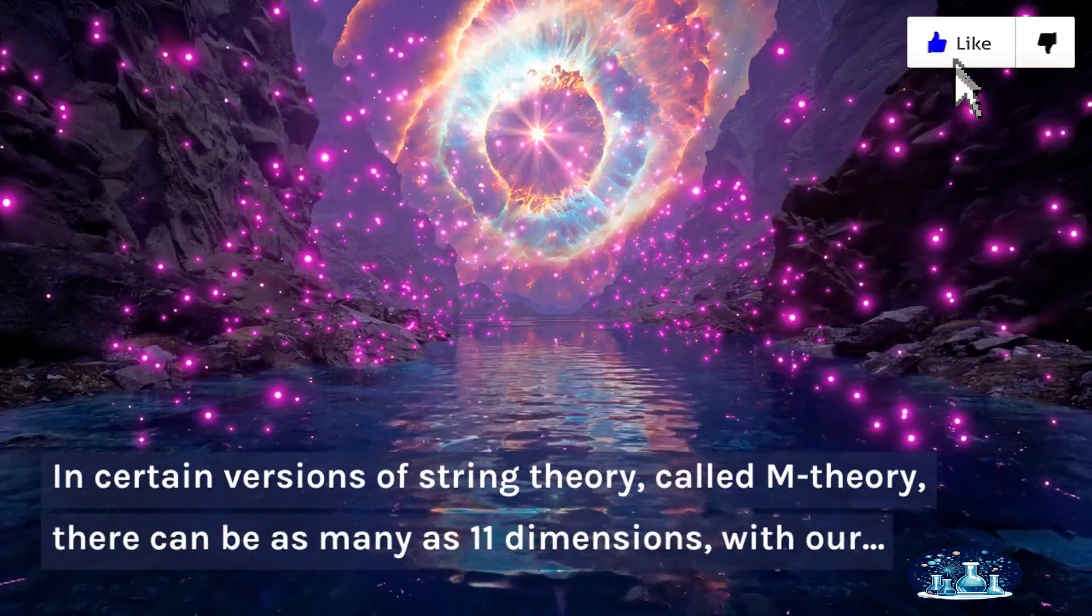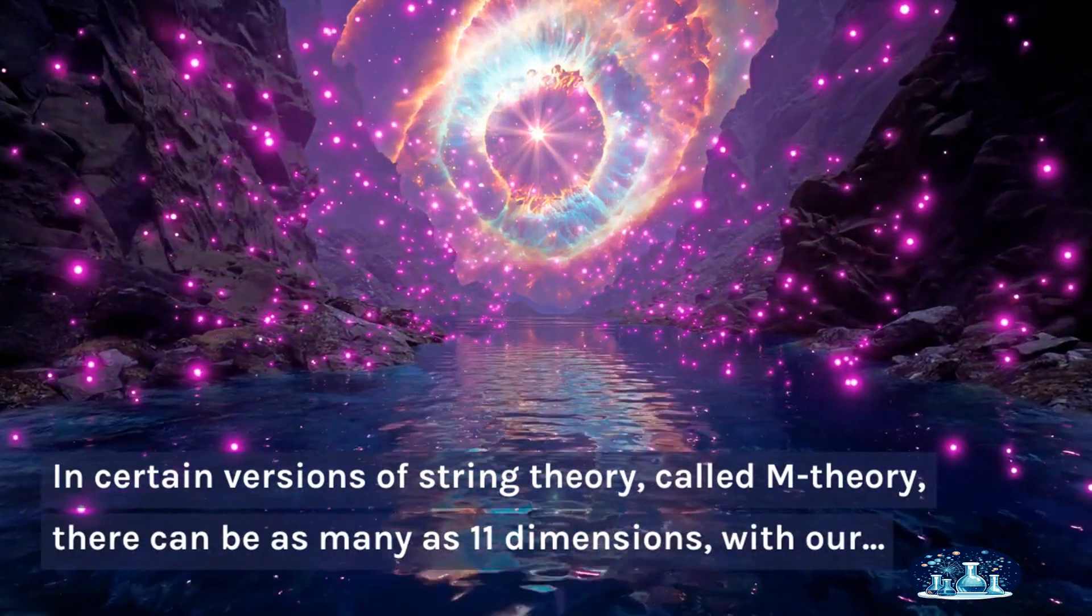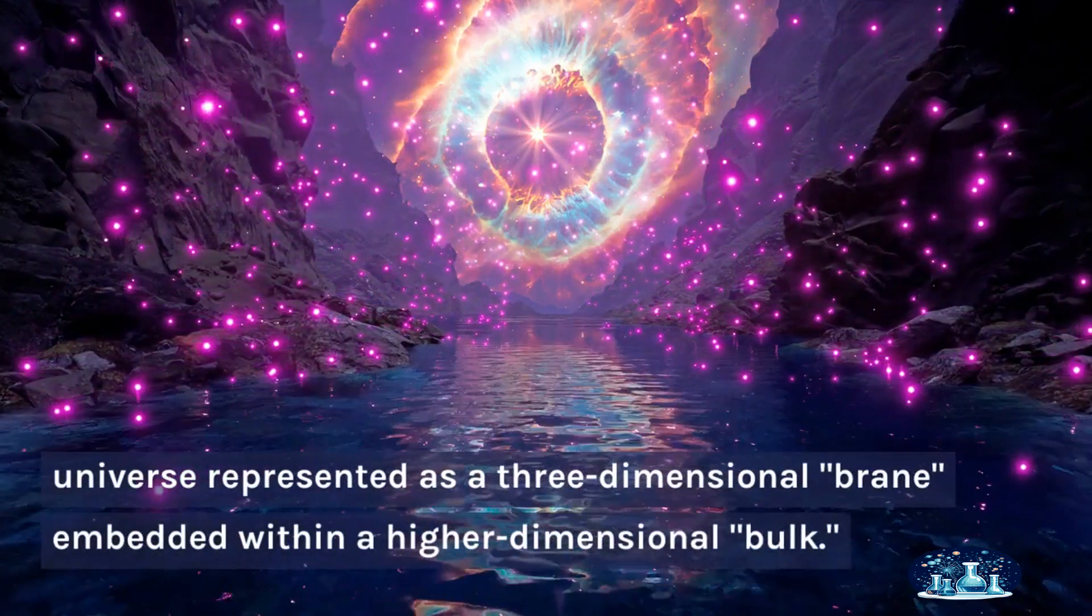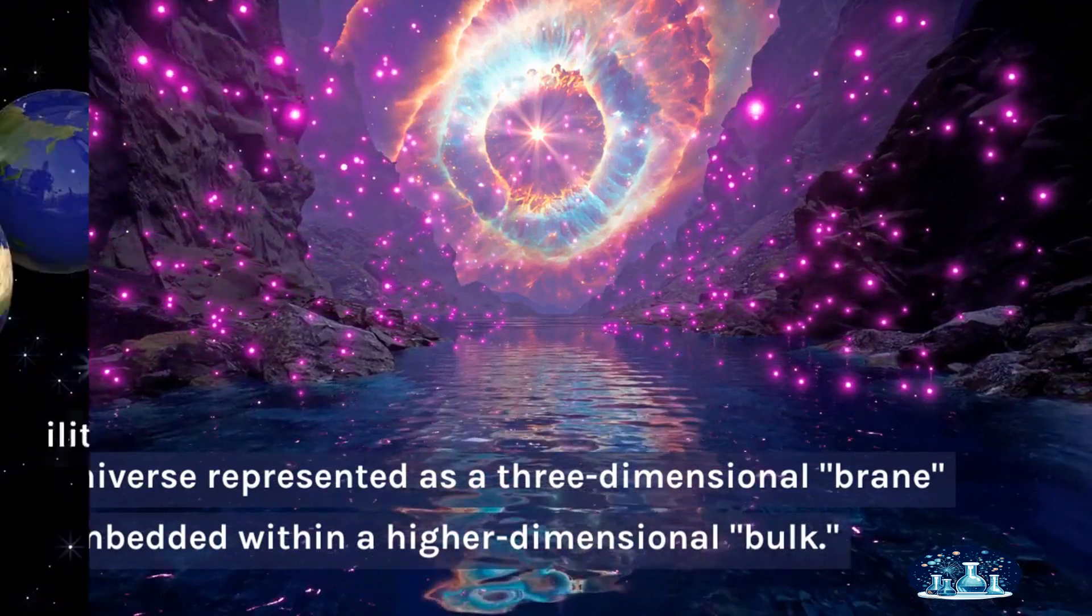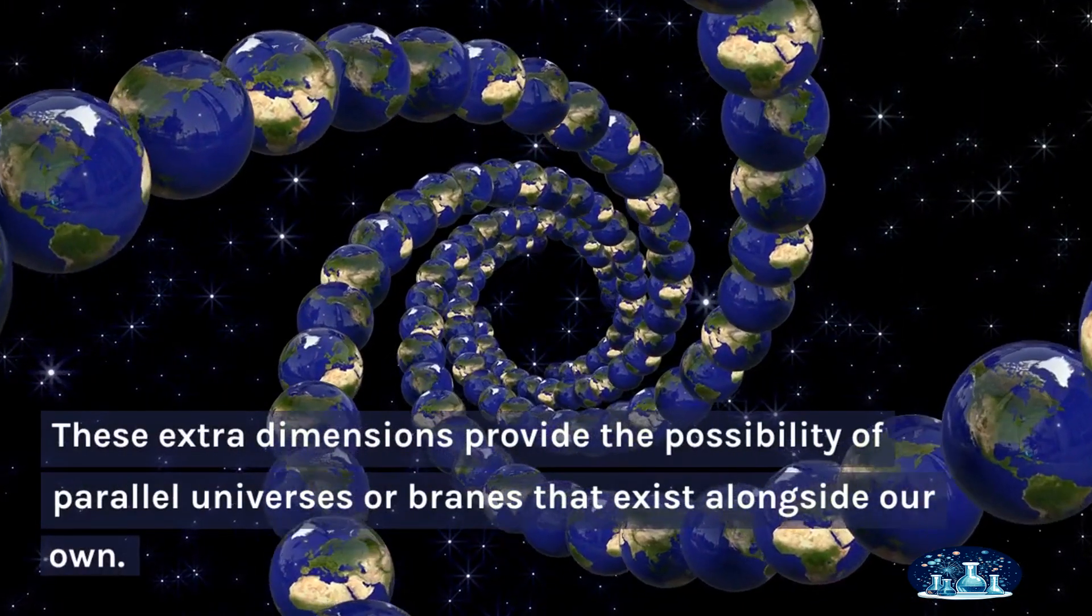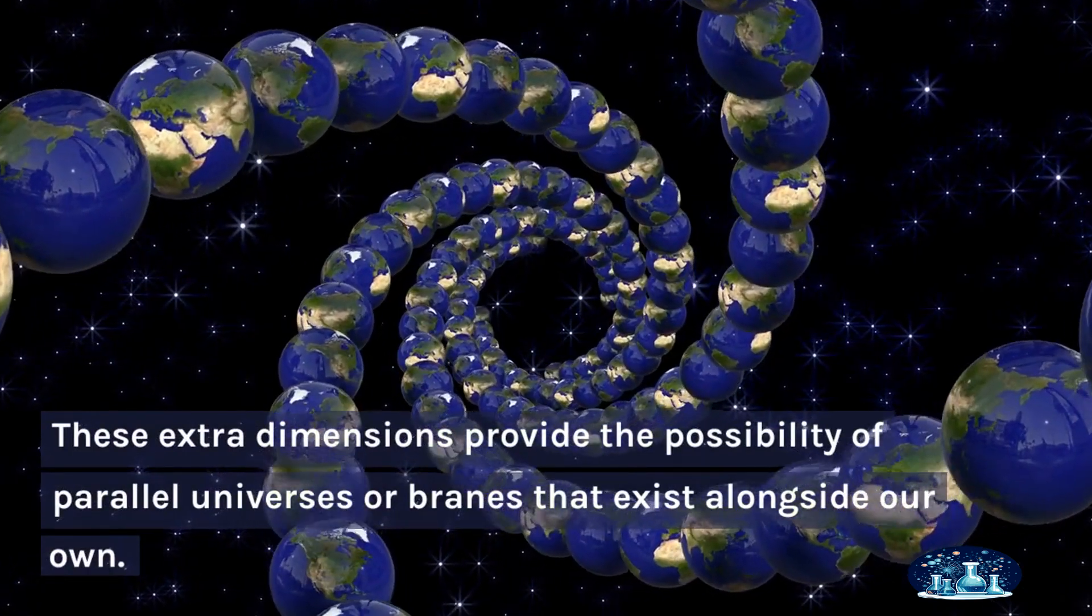In certain versions of string theory, called M-theory, there can be as many as 11 dimensions, with our universe represented as a three-dimensional brane embedded within a higher dimensional bulk. These extra dimensions provide the possibility of parallel universes or branes that exist alongside our own.